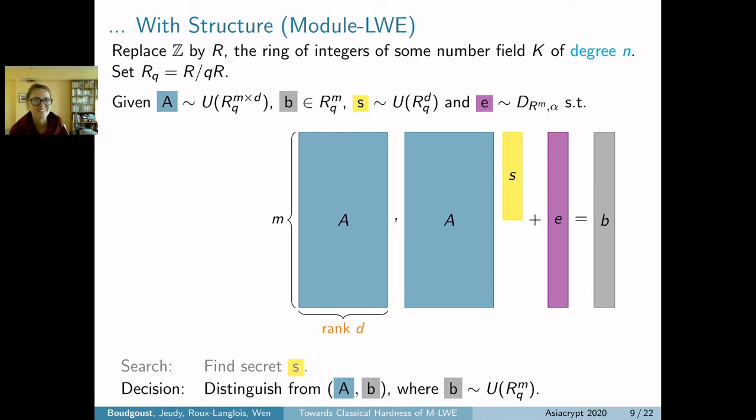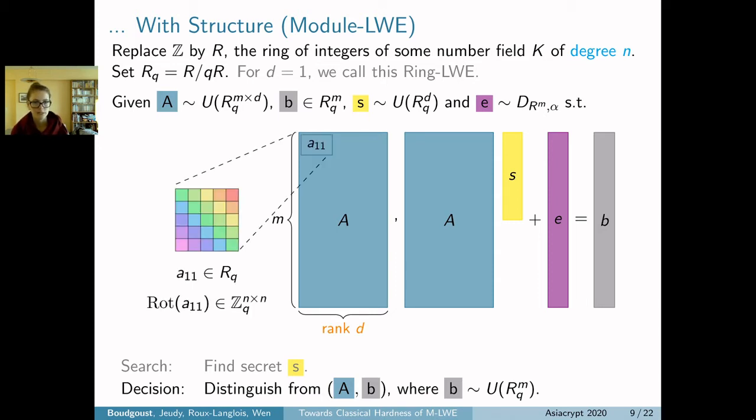The first thing I'd like to remark is that for d=1 this is a special case we call the ring-LWE problem. The second thing is that the matrix A somehow hides some structure. Every element in this matrix A, say A₁₁ the first entry, defines a structured matrix in Z_q^{n×n} where n is the ring degree. We should not forget this, but for the rest of this talk this doesn't play an important role.